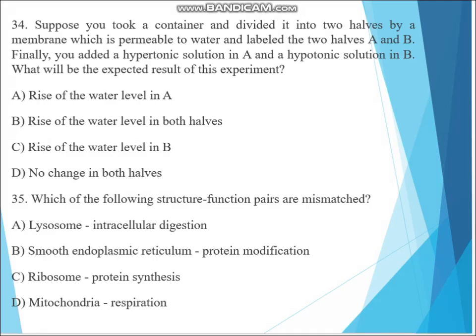Question 34. Suppose you took a container and divided it into two halves by a membrane which is permeable to water and labeled the two halves A and B. Finally, you add a hypertonic solution in A and a hypotonic solution in B. What will be the expected result of this experiment? The answer must be rise of the water level in A because water moves to the hypertonic side via osmosis.